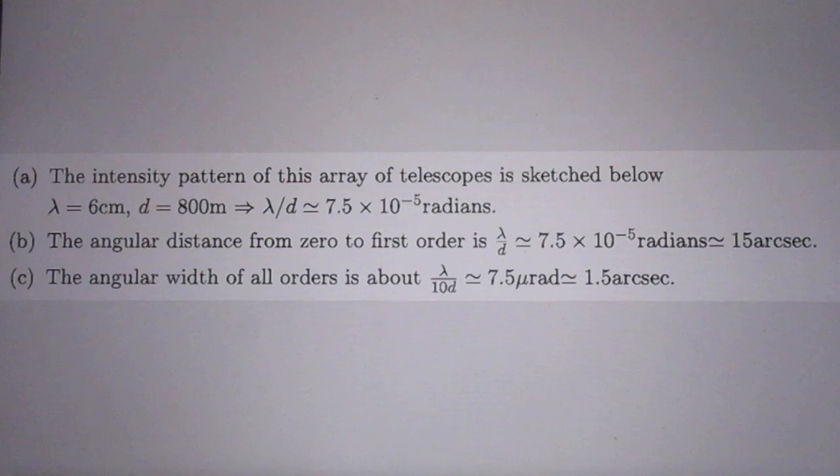Now comes the beauty if you have 10 telescopes. Then the angular width of all the orders becomes 10 times smaller. It becomes lambda divided by 10d, and that is only 1.5 arcseconds.